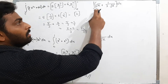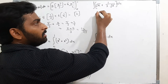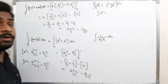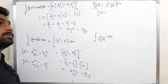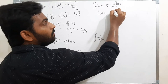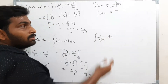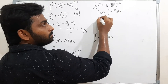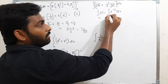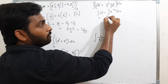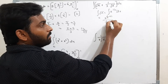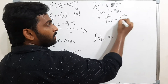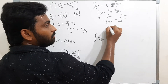Now, what is the integration of √x? Root x is nothing but x^(1/2). Integration of x^(1/2) dx uses the same formula: x^(1/2 + 1) divided by (1/2 + 1). That gives x^(3/2) divided by (3/2).